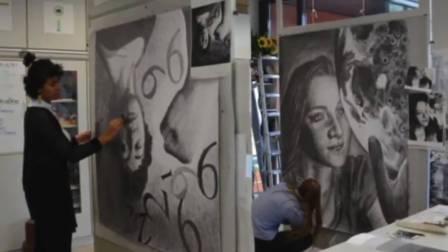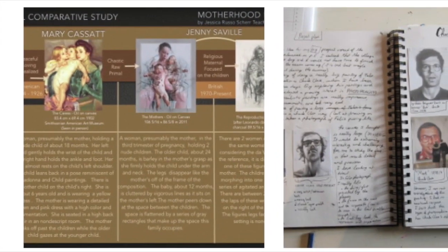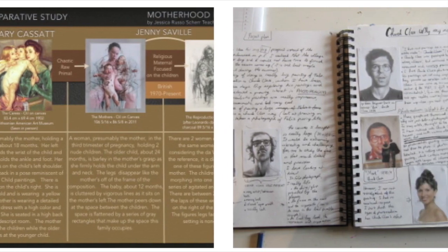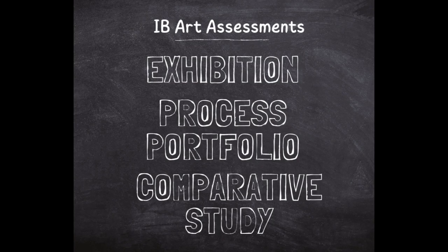IB Visual Arts can be taken at a higher or standard level. There are three components: the comparative study, the process portfolio, and the exhibition.